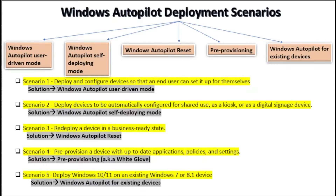Now let's talk about the Windows Autopilot scenario. Each and every organization is different with respect to their nature of work, so their requirements are also different. Windows Autopilot is fulfilling and catering to all these different types of requirements. There are four to five scenarios where we can use Windows Autopilot: user-driven mode, self-deploying mode, Windows Autopilot reset, pre-provisioning (also known as white glove), and Windows Autopilot for existing devices.